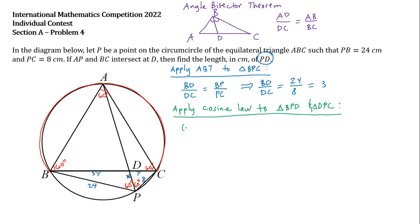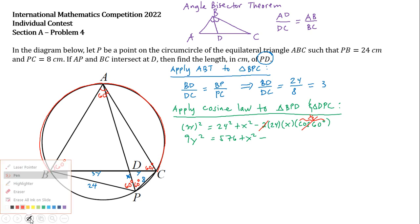So we have the square of 3Y is equal to 24 squared plus X squared minus 2 times 24 times X times the cosine of 60 degrees. So this is 9Y squared, 576 plus X squared minus, take note that cosine 60 degrees is 1 half, so if this is 1 half, we can actually cancel this one and this, so we have minus 24X.